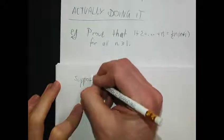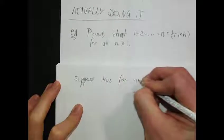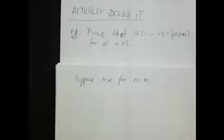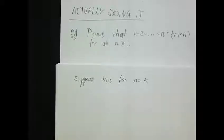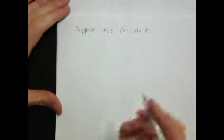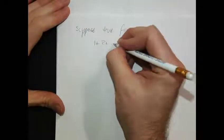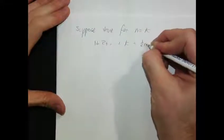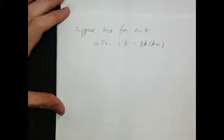Suppose true for N equals K—meaning 1+2+...+K = K(K+1)/2. We're not really supposing it's true; we're starting with that statement and creating a machine that will turn it into 'true for N=K+1.' This is the construction of the machine. Suppose true for N=K means that 1+2+...+K = K(K+1)/2, and that's what it means to be true for N=K.